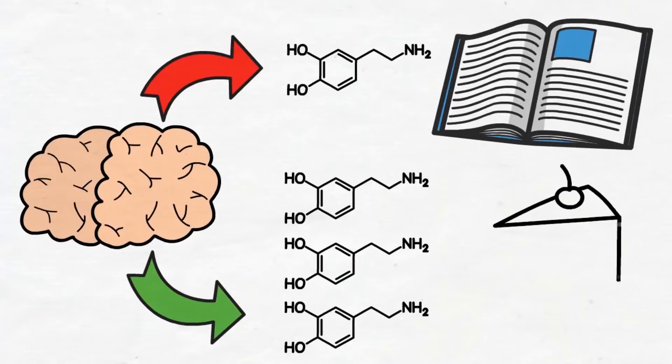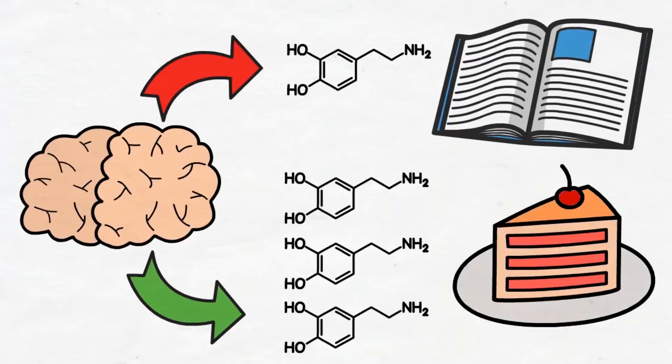So which behaviors release dopamine? Any activity where you anticipate there's a potential reward releases it. But if you know there are no immediate rewards with the behavior, your brain won't release it. For example, before you eat comfort food, your brain releases dopamine because you anticipate that the food will make you feel good, even if it actually makes you feel worse.